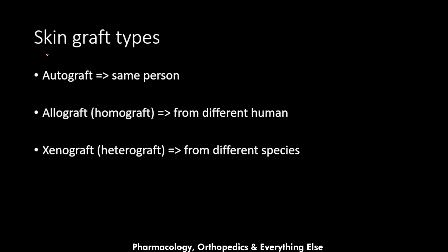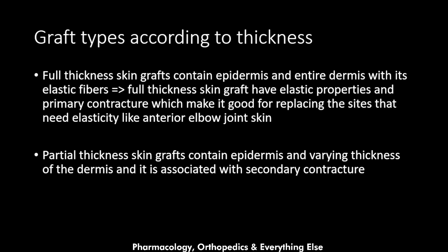The types of skin graft include the autograft, the allograft (also called the homograft), and the xenograft (also called the heterograft). The autograft is taken from the same person; the allograft is from a different human; and the xenograft is from a different species.